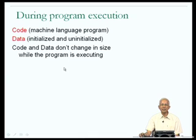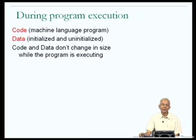In addition to the code and the data, as my program executes there are going to be certain pieces of data which are heap allocated and other pieces of data which are stack allocated. The heap-allocated data is going to come into existence when it is explicitly created by malloc, whereas stack-allocated data such as a function local variable will come into existence when a function is called.